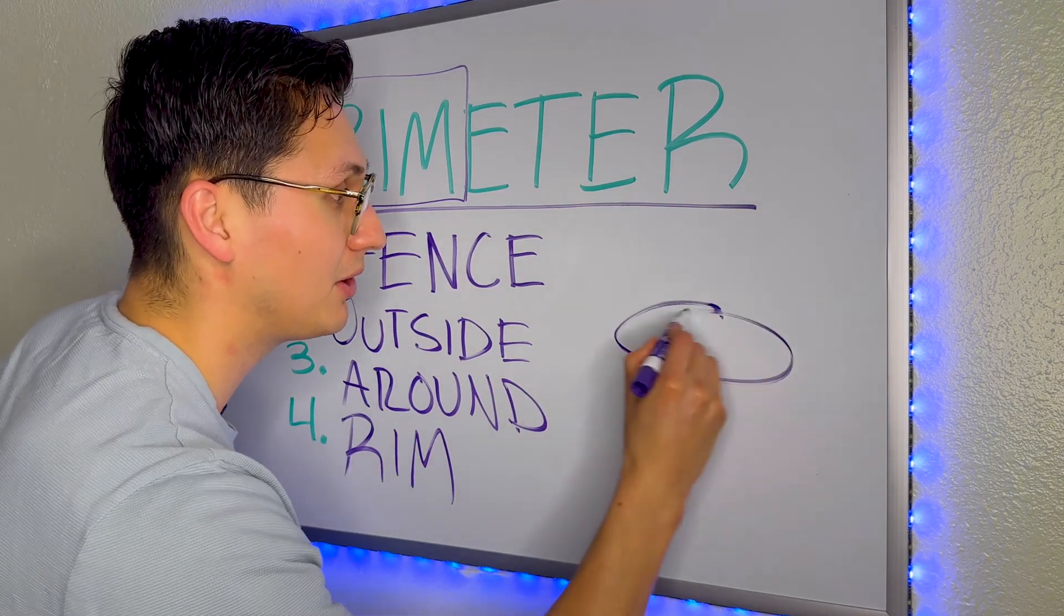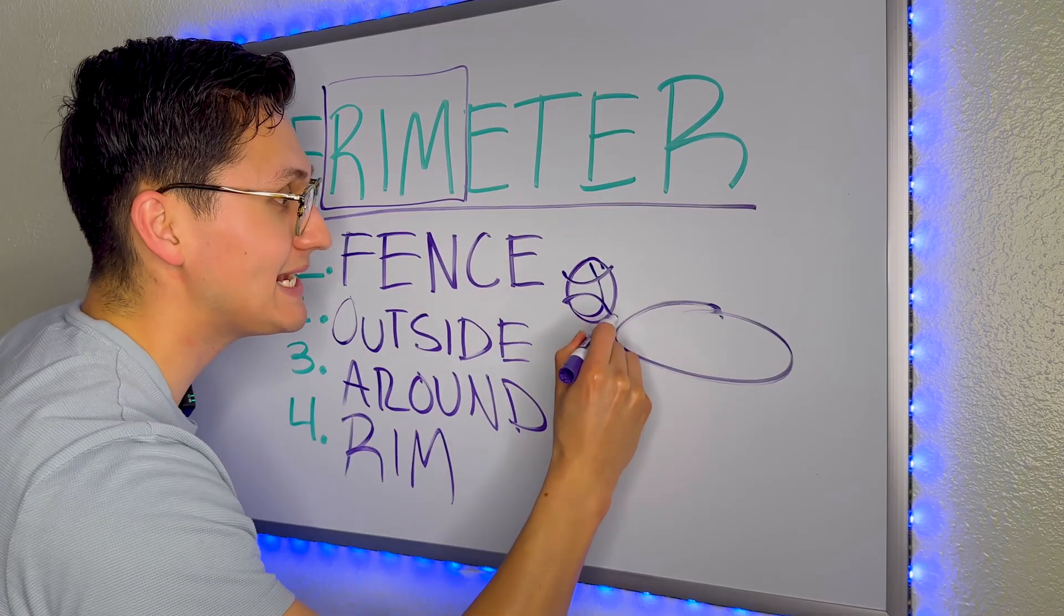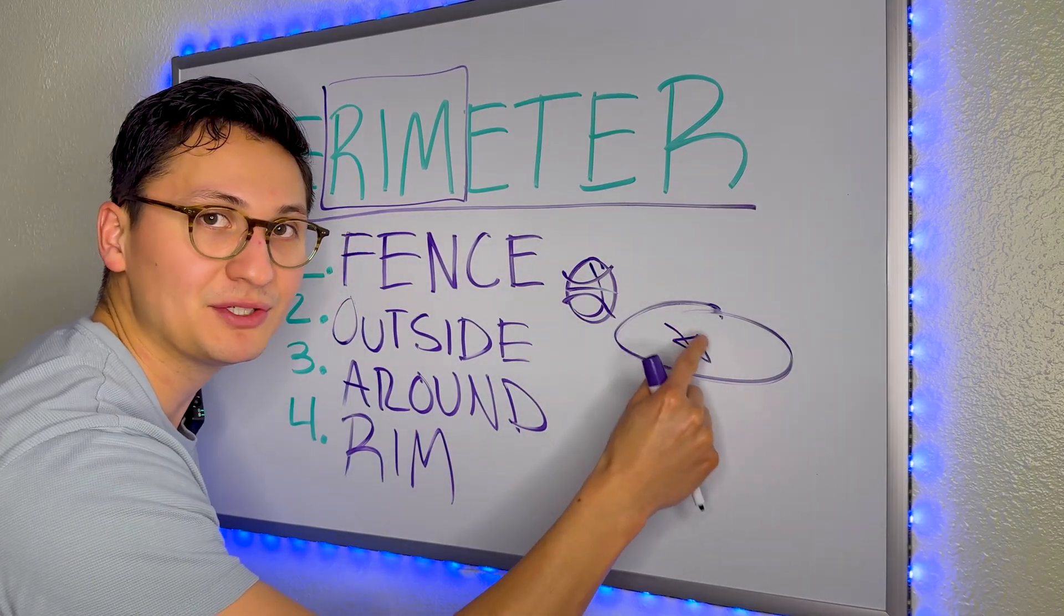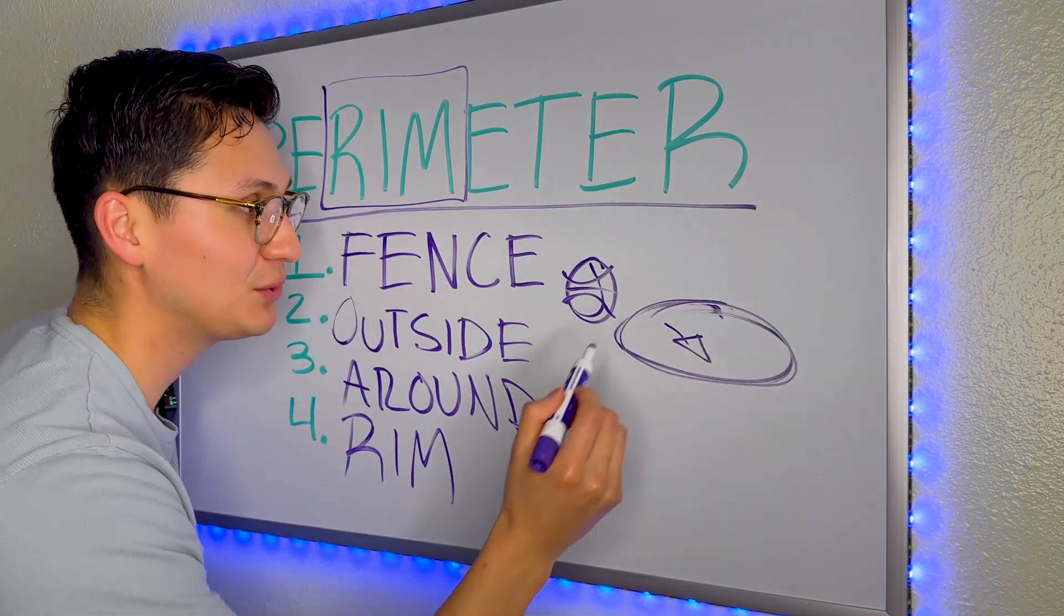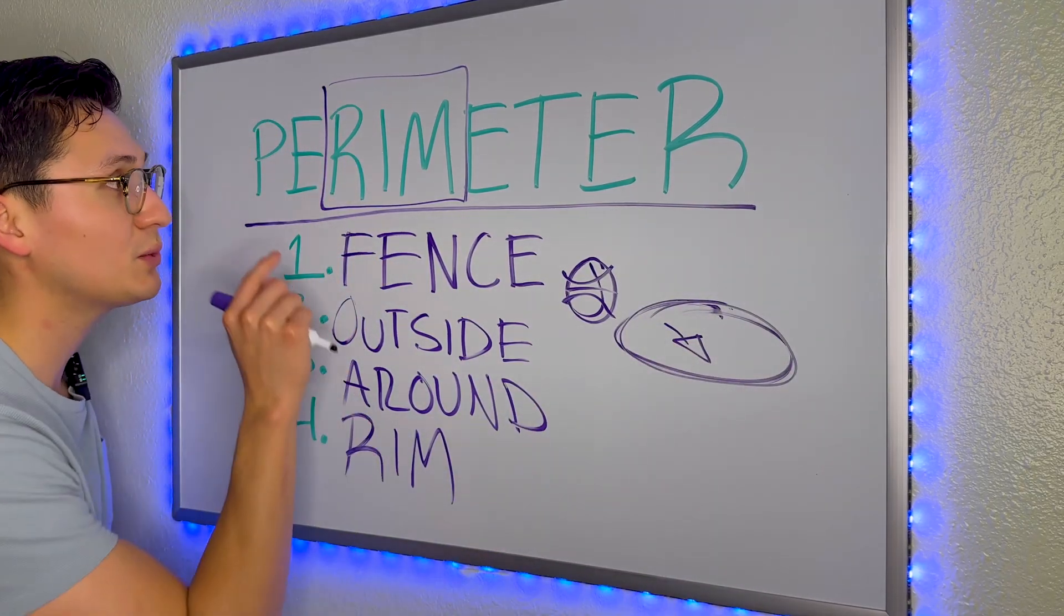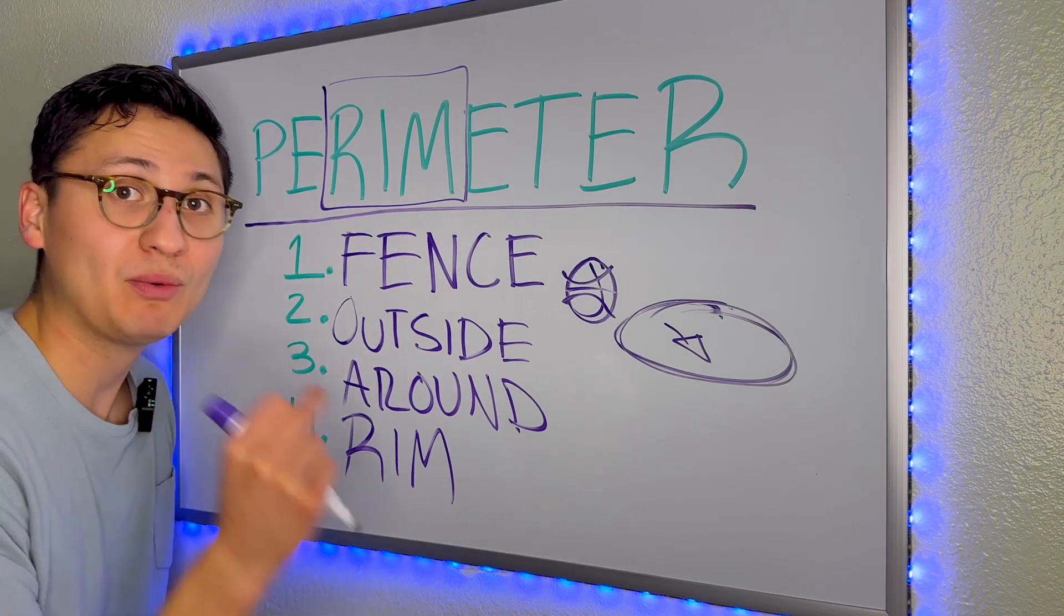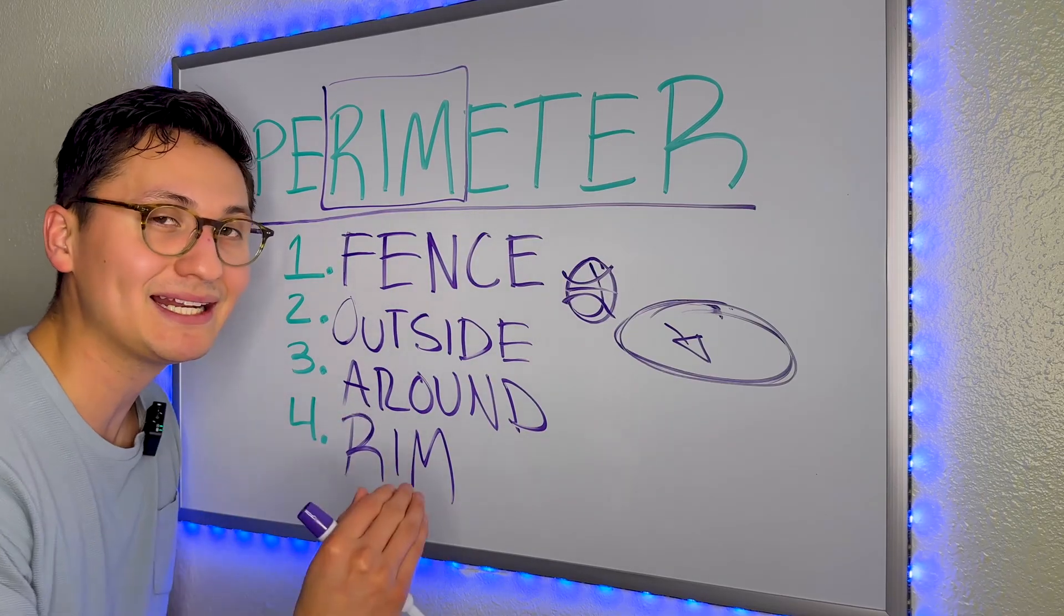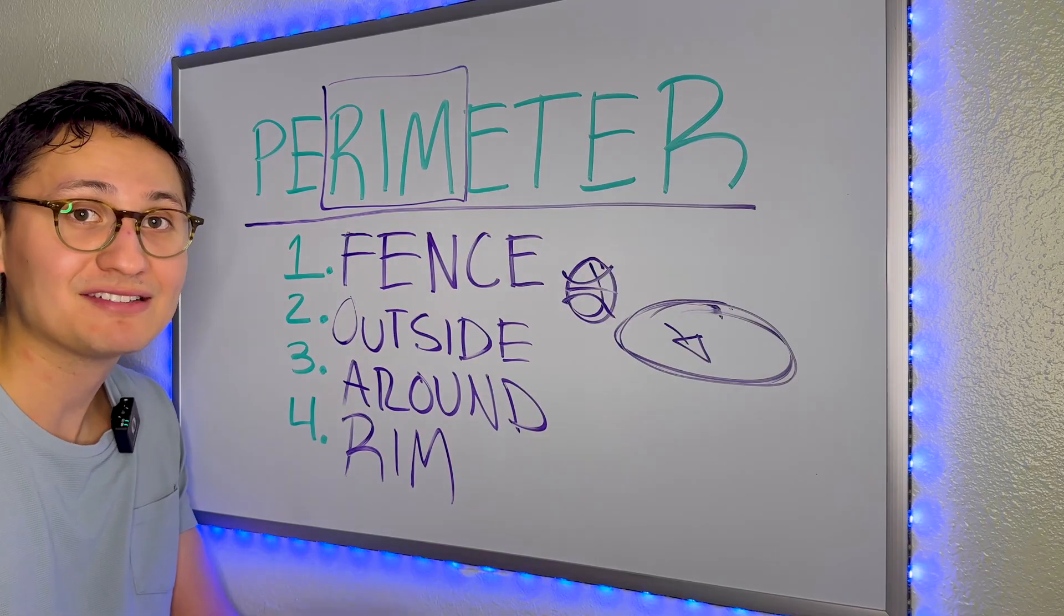Whenever I play basketball, I usually shoot a shot and I try to make it inside of the rim. But is this space the rim? No, the outside is the rim. So whenever you see the word rim, think outside, think around, think perimeter. These four keywords are going to help you automatically notice when they're asking for perimeter and when they're asking for area.